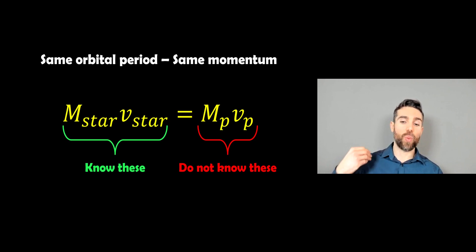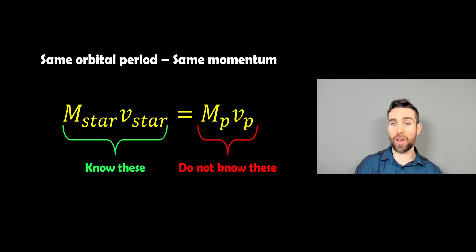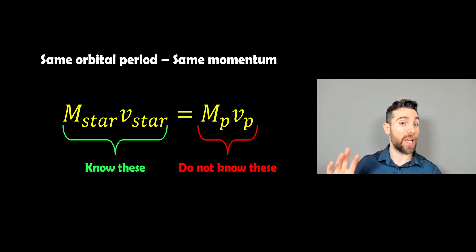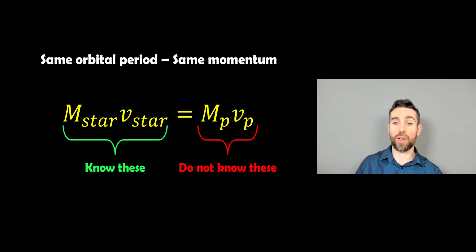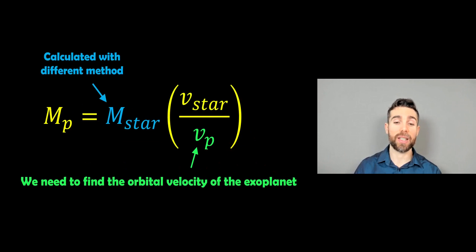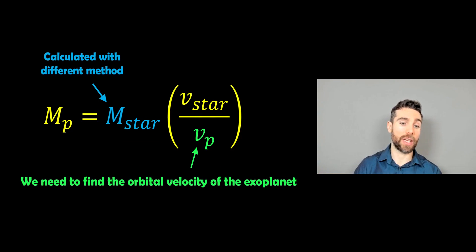Once we have the radial velocity, we can get the velocity of the star. We know the mass of the star from another method. Because the planet and the star have the same orbital period — they're both orbiting the barycentre, just at different distances — they have the same momentum. We don't know the right-hand side (the mass and velocity of the planet), but we do know the left-hand side. So we rearrange for the mass of the planet. We already have the mass of the star, same as with the radius.